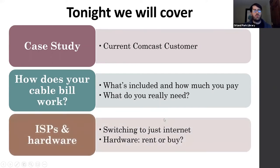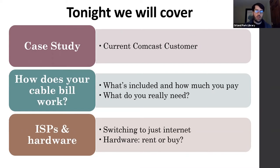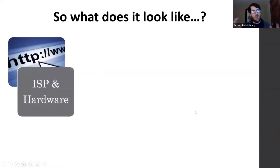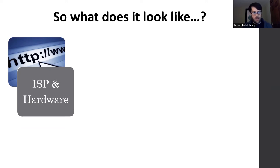We're going to talk about ISPs and hardware. ISPs are internet service providers — in the Orland Park area we only have two options: Comcast and AT&T. We're going to talk about switching to just internet rather than having internet and cable TV, and we're going to talk a decent amount about hardware tonight. Hardware is one of the ways your cable bill may go higher if you're renting equipment. We'll cover renting versus owning your own equipment. And at the end, what does switching from a traditional cable/internet package to just internet plus streaming services look like — which we'll talk more about next week.